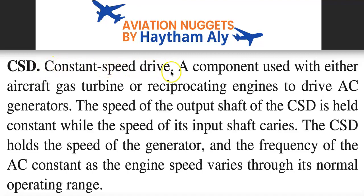As you can see here, the Constant Speed Drive is a component used with either aircraft gas turbine or reciprocating engines. The rotating shaft of either the gas turbine or reciprocating engine always runs at a variable speed — not a constant RPM. But the generator needs a fixed input speed, so the Constant Speed Drive must be there to convert the variable speed of the engine shaft into a fixed speed going to the generator.